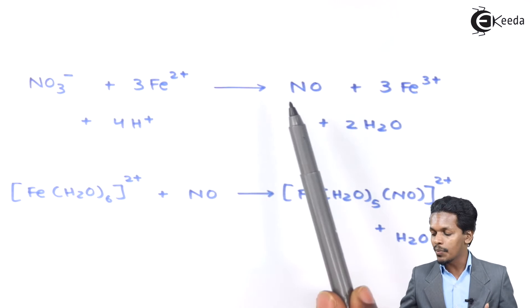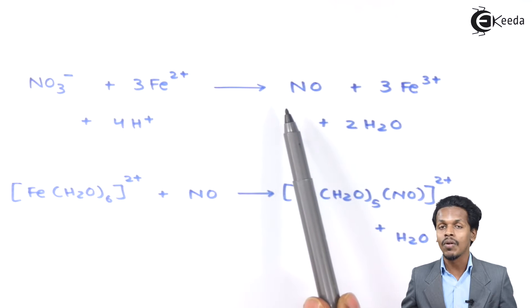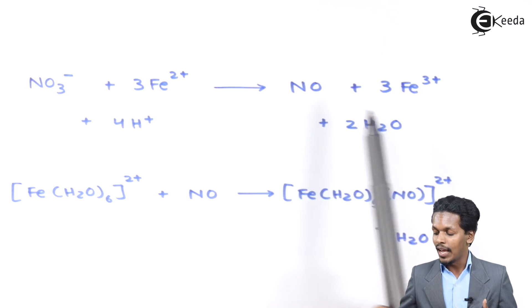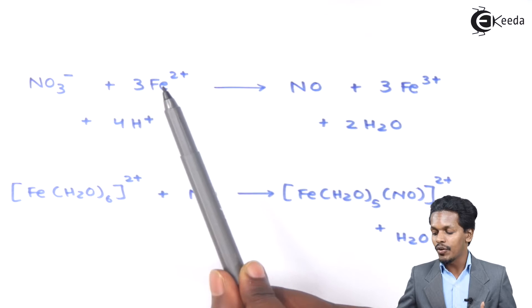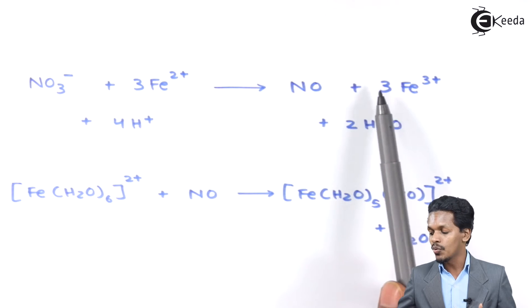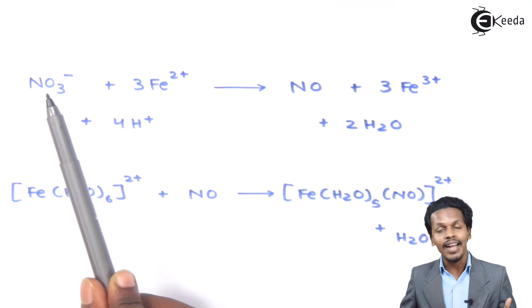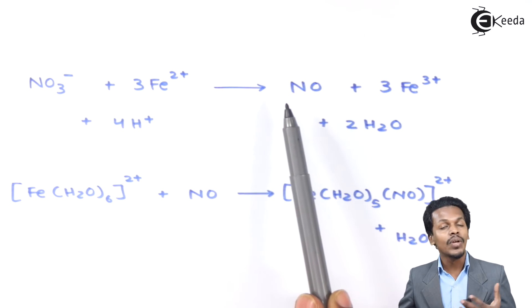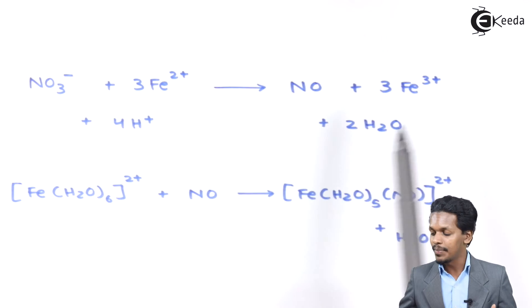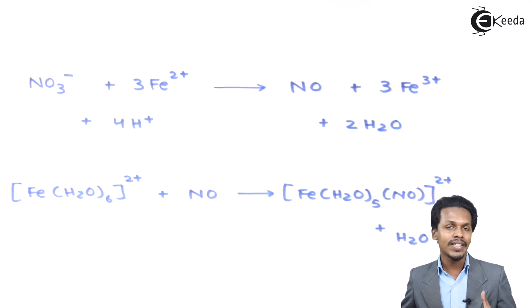The reaction proceeds such that the product we get is NO, or nitric oxide. Along with that, the Fe2+ is oxidized to 3 moles of Fe3+. Here we can see the nitrate ions have been reduced to NO, nitric oxide, along with 2 moles of H2O as a byproduct.